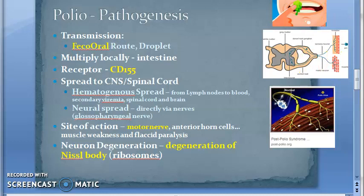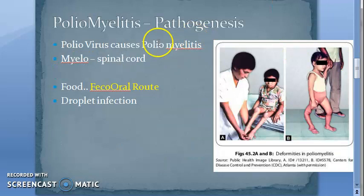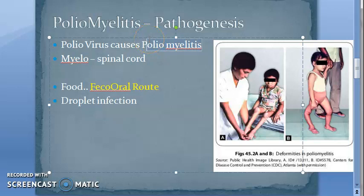Clinical manifestations have not been frequently asked in exams, but we will look at them in the next video. To summarize today: we covered the pathogenesis of poliomyelitis — the poliovirus causes poliomyelitis, where 'myelo' means spinal cord, so the spinal cord is affected. Come back for the next video on clinical manifestations.